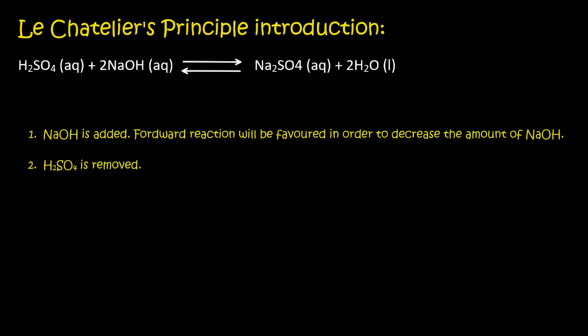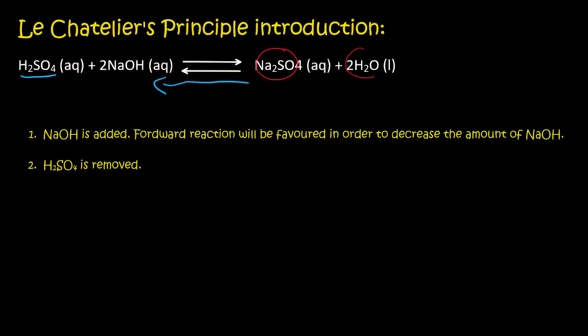Now for the next one, we're going to remove H2SO4. So we're going to take some of that away. So remember, the system will now try and make more H2SO4. So if it wants to make H2SO4, then we will have to go in the reverse direction so that these two will become less and these two will become more.